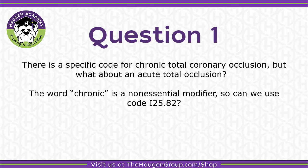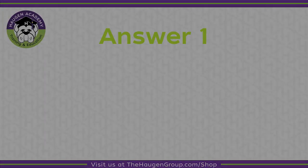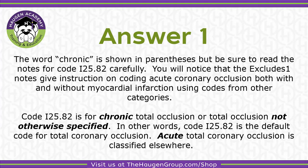There is a specific code for chronic total coronary occlusion, but what about an acute total occlusion? The word 'chronic' is a non-essential modifier, so can we use code I25.82? The word 'chronic' is shown in parentheses, but be sure to read the notes for code I25.82 carefully.